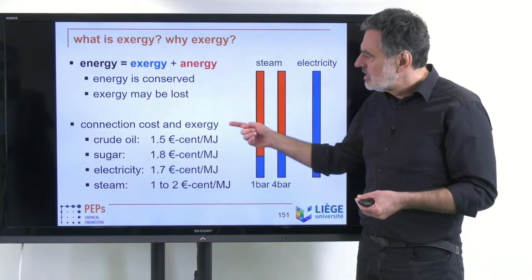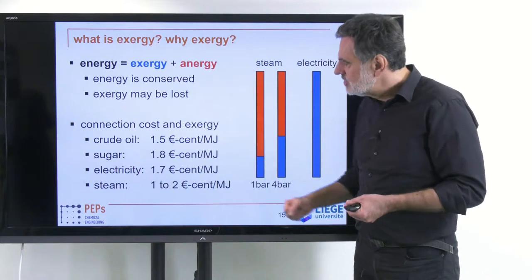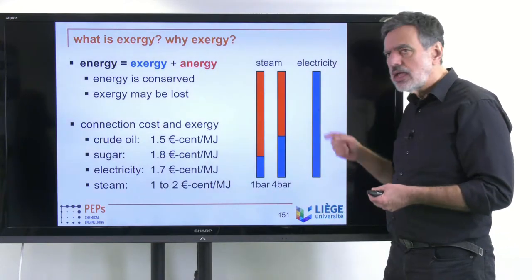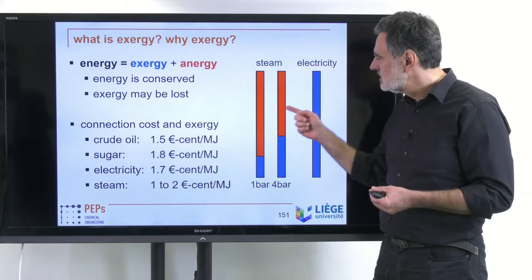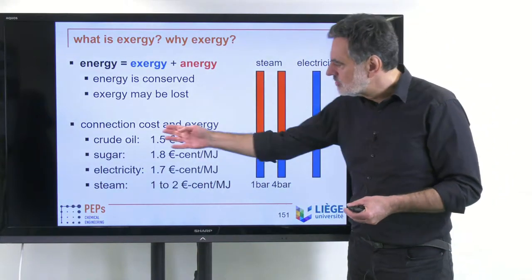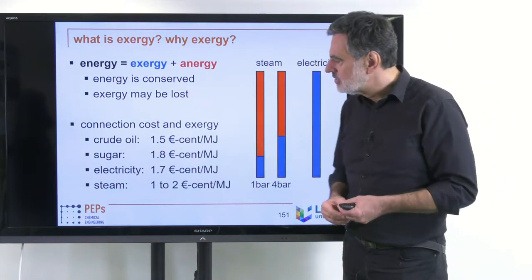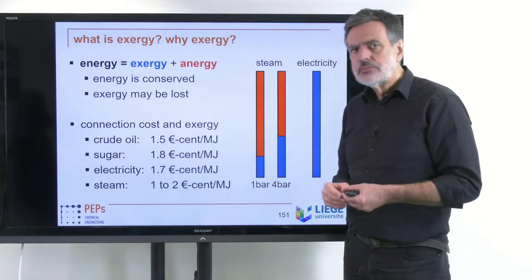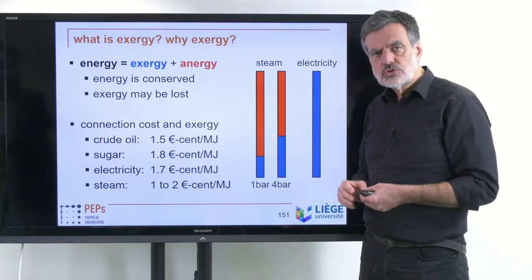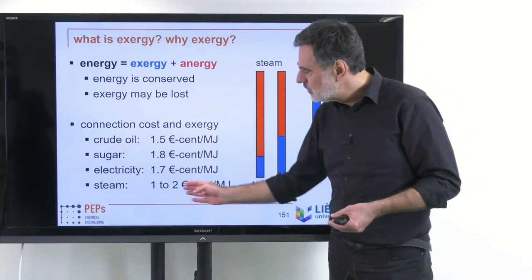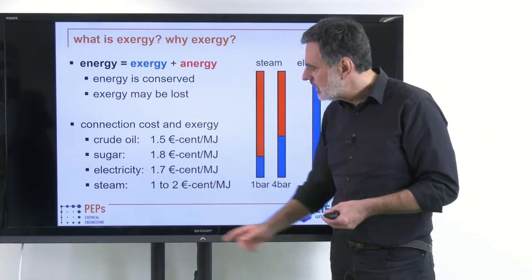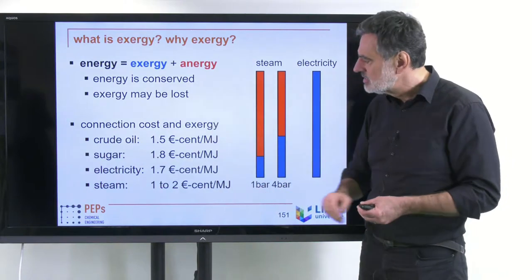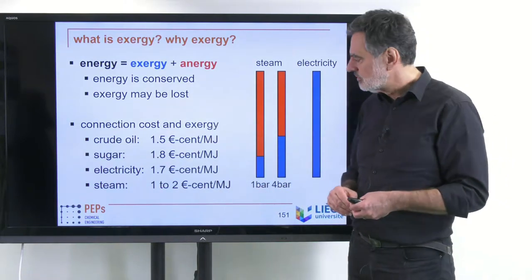It is also nice that there is a connection between cost and exergy. If you evaluate the price for different energy carriers — electricity, steam at different levels, crude oil, and sugar — you always find quite similar economic contributions. At the time that study was made, the price was between one and two euro cents per megajoule of exergy for all of these cases.